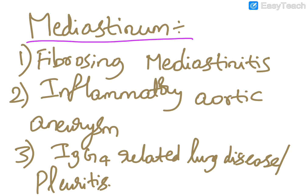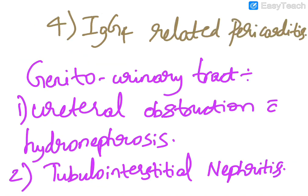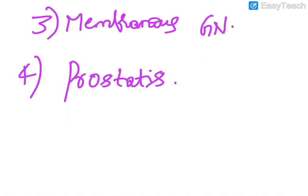Inflammatory aortic aneurysm, IgG4 related lung disease also known as pleuritis, and IgG4 related pericarditis. Coming to the genitourinary tract, manifestations include ureteral obstruction with hydronephrosis, tubulo-interstitial nephritis, membranous glomerulonephritis, and prostatitis.